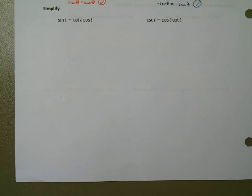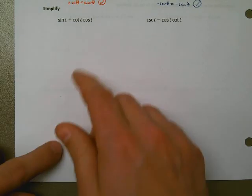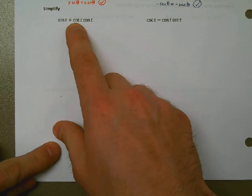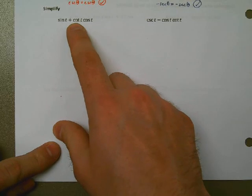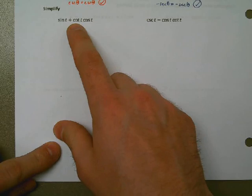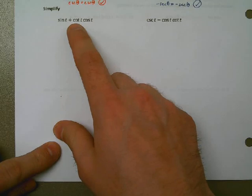A simple idea to keep in mind: if all else fails and you're trying to simplify an expression — there's no equal sign — if I'm trying to take this expression and make it simpler, one thing you might consider is to write every single term that you see in terms of sine and cosine.